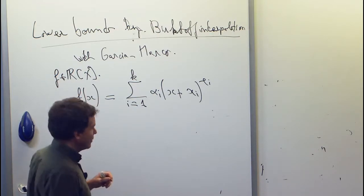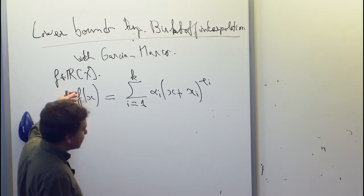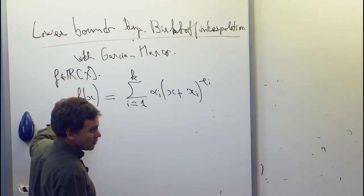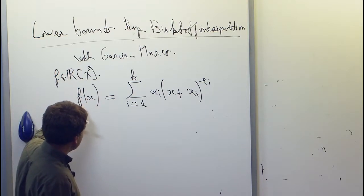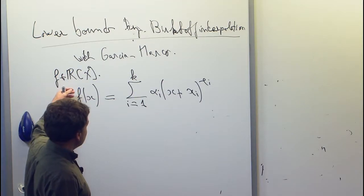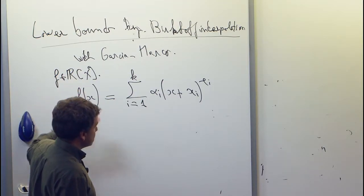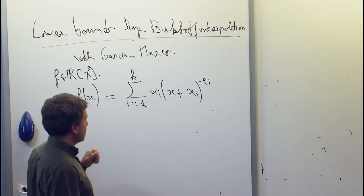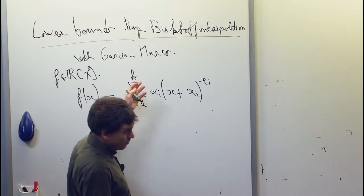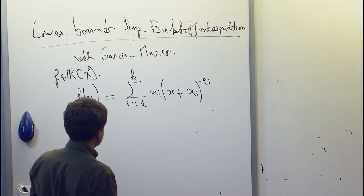As usual, we're in lower bounds where the goal is to find an explicit polynomial for which you need as many terms as possible. We should take a polynomial of degree d. Basically by counting the number of parameters, there must be some polynomials which require about d terms, but the challenge is to find an explicit example.